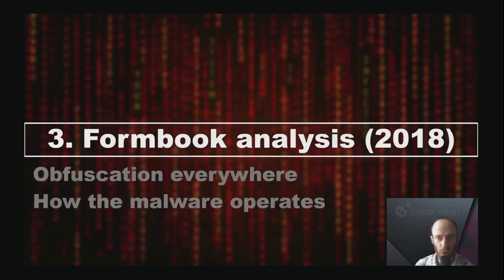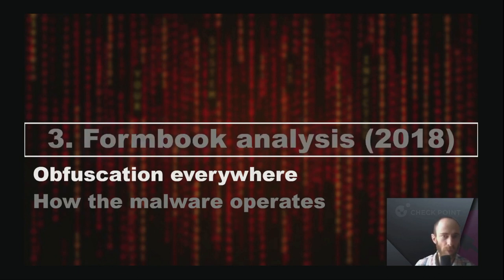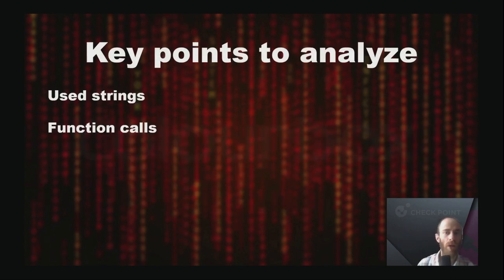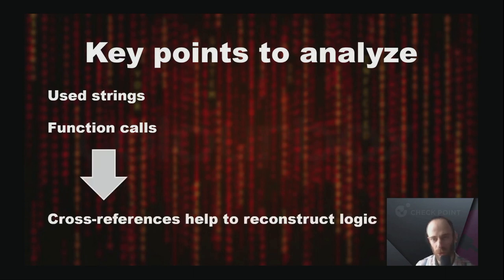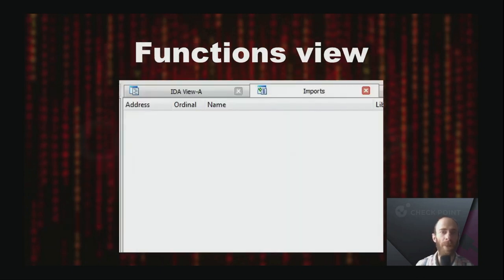Let's speak about Formbook analysis we conducted four years ago and the complications we encountered. We start the analysis by checking used strings and function calls, then use cross-references to reconstruct the logic of the application. However, in the case of Formbook, the process does not unfold that simply. When we check the tab with functions, we don't see a single function there, and no function appears to be called inside — which is of course not true.